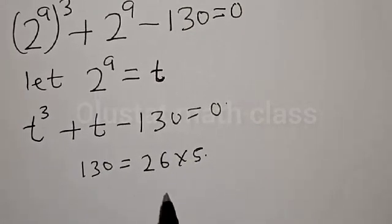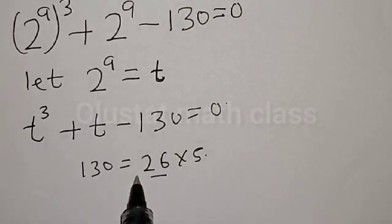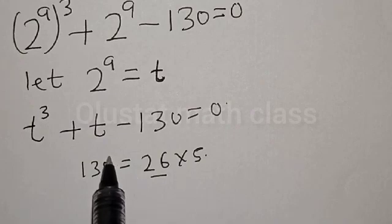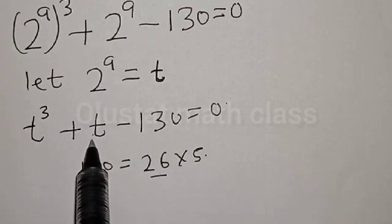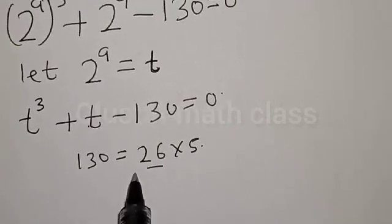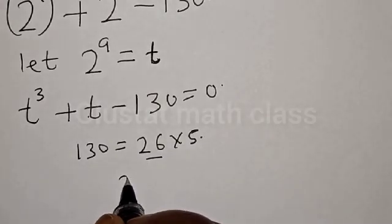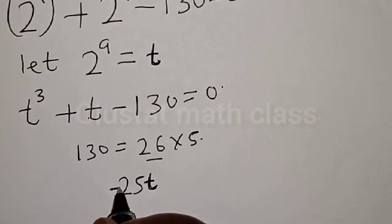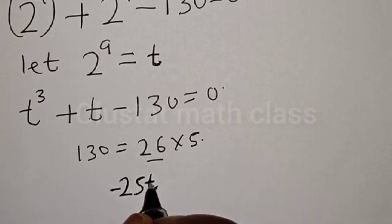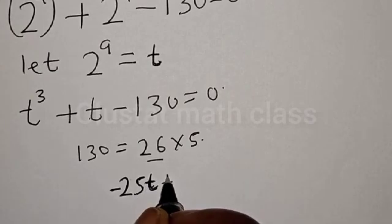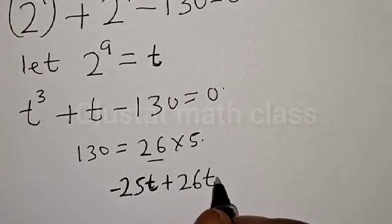Now, 130 is the same as 26 times 5. The coefficient of t here is 1. We can write 26 as minus 25t plus 26t to help us split the middle term for factoring.